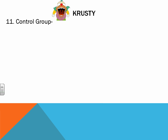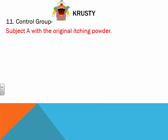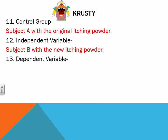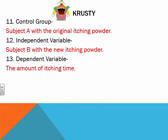Krusty: the control group is subject A with the original itching powder. The independent variable is subject B with the new itching powder. The dependent variable is the amount of itching time.